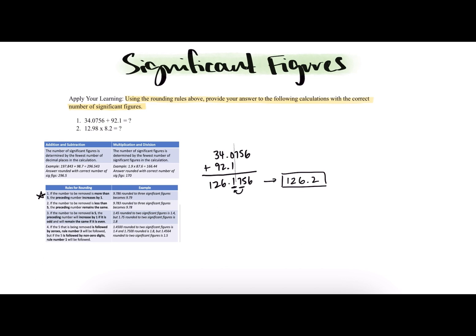Let's move on to part two: 12.98 times 8.2 equals what? Based on our multiplication and division rules for significant figures, the number of significant figures will be determined by the fewest number of significant figures in the calculation. 12.98 has four significant figures, and 8.2 has two sig figs. If you're not sure how I counted those, be sure to watch the other part of the significant figures unit videos.